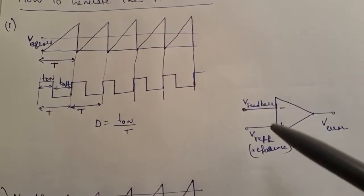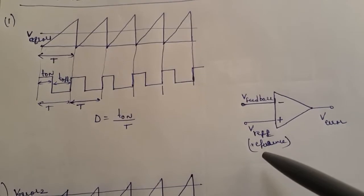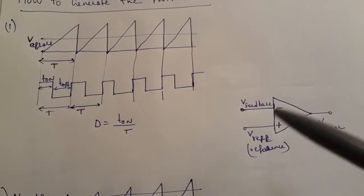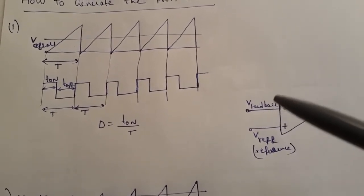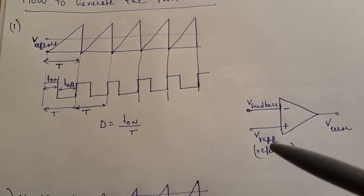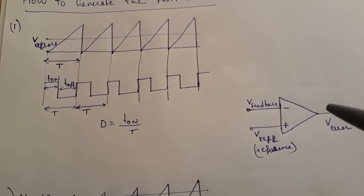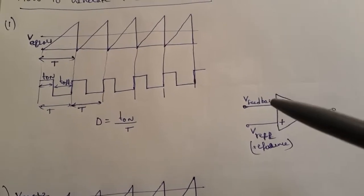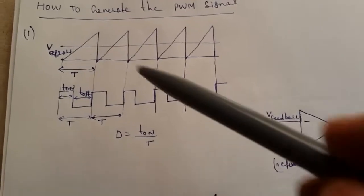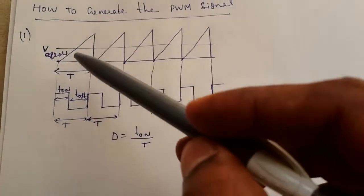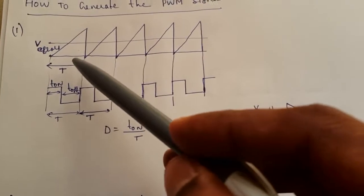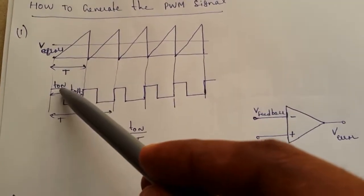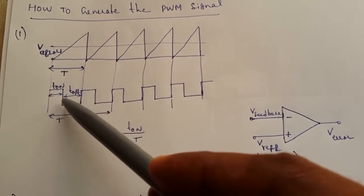The feedback voltage — that is, the output voltage — is compared with a reference voltage, producing an error voltage. Whenever there is a large deviation between the output voltage and the reference, the error voltage will be high. Whenever the difference is small, the error voltage will be low. In this case, the error voltage is at this value, giving a corresponding on-duration.